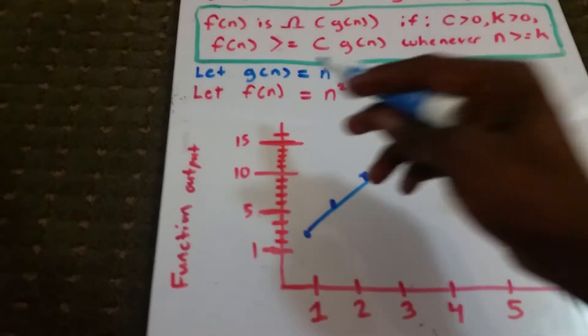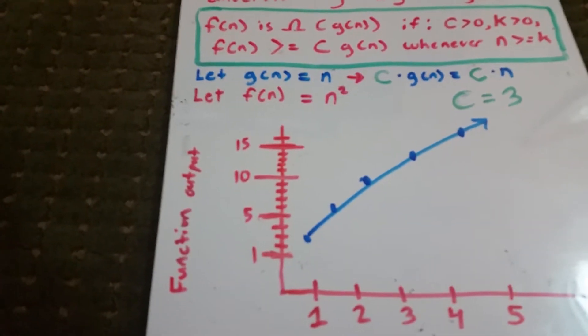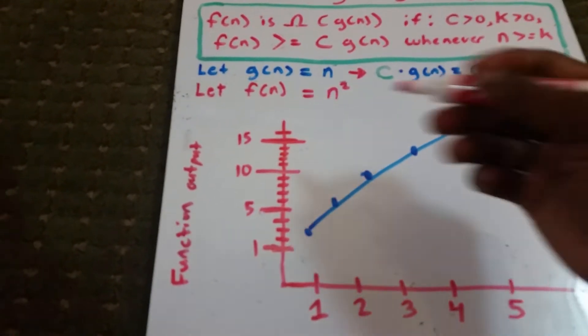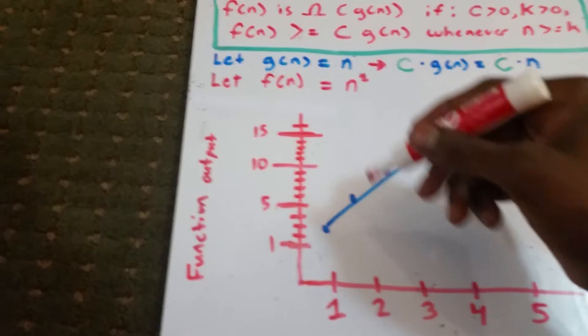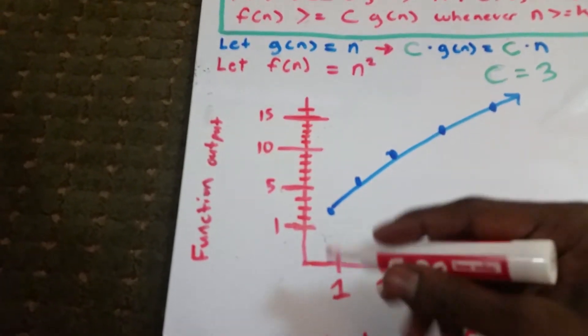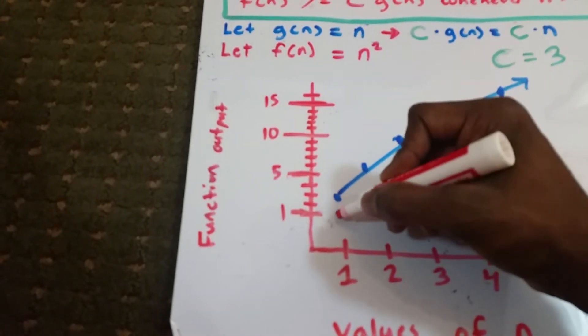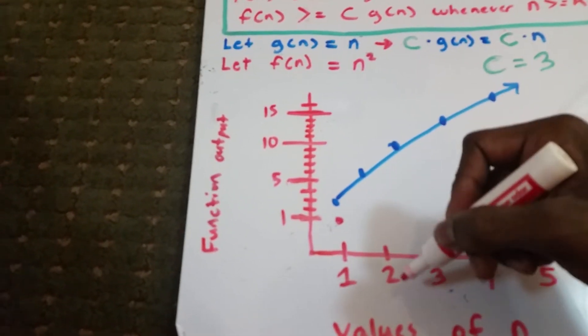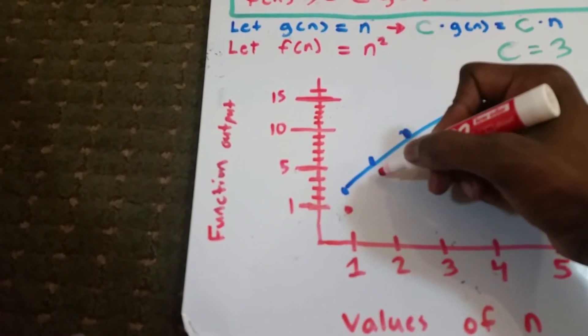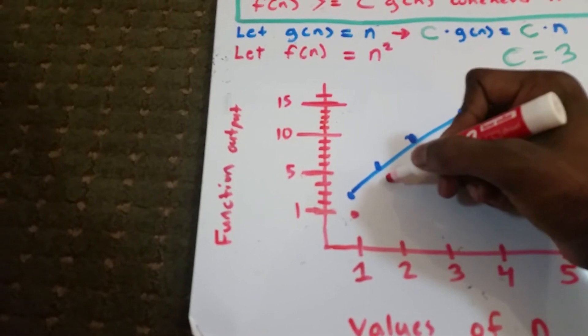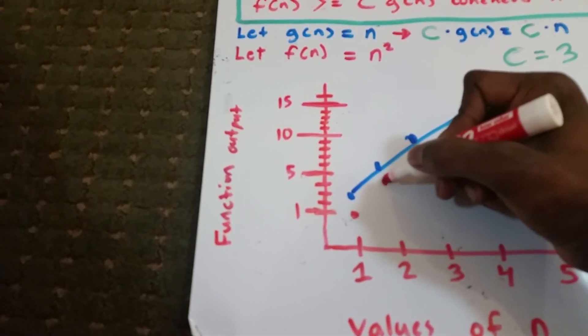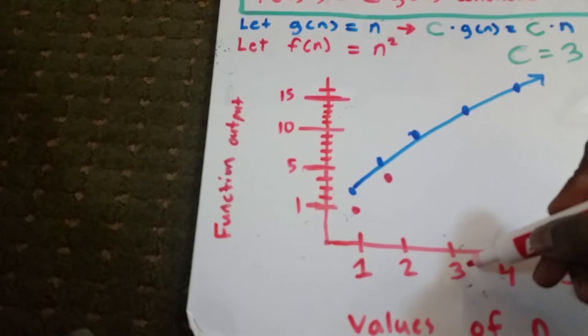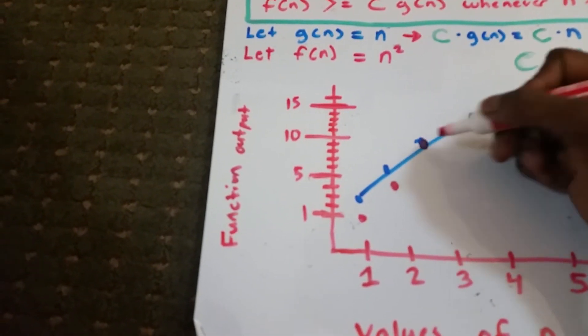So now we're going to graph our f of n. Our f of n, we use the red marker. It starts off with n squared. So when n equals 1, we get 1. And when n equals 2, we get 2 squared, which is 4. 4, about here. 3 squared is 9, so that's the same point there.